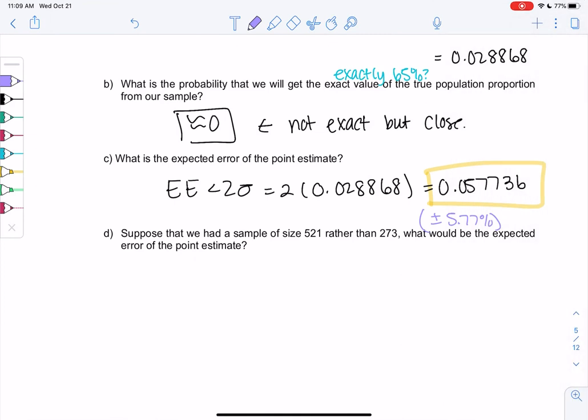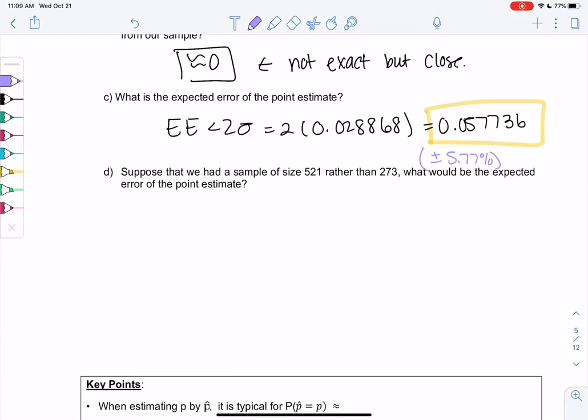So let's see what happens to expected error if I change the sample size. The expected error changes because my standard deviation changes. So expected error is within two standard deviations. But now that we have a sample size of 521, we get a new value for the standard deviation. Bigger samples will have less variation.